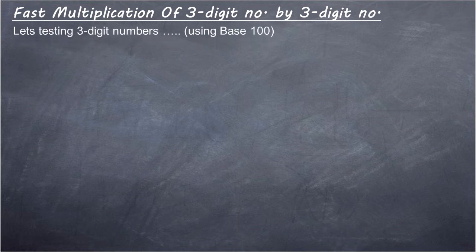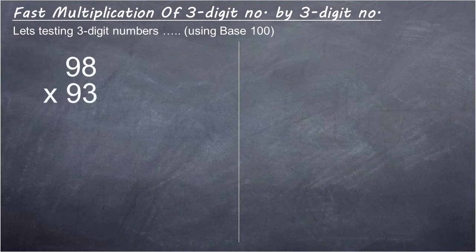Let's test 3-digit numbers, using base 100. 98 multiply 93.